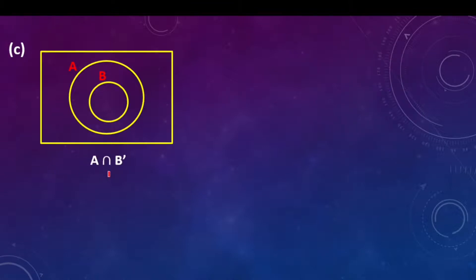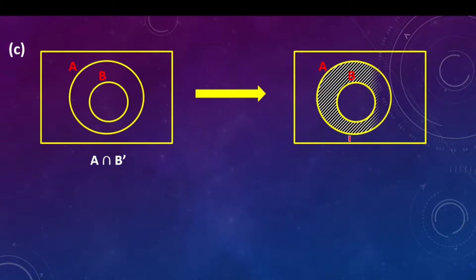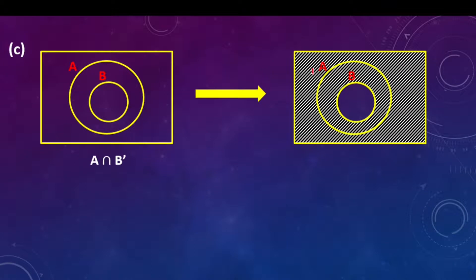Part C says A intersection B complement — those members that are not in B. Those members that are not in B are here and also here, so we shade it in this way. These members which are in set A are not in set B. We can also include the universal set here, because those members in the universal set remaining here are also not part of set B.